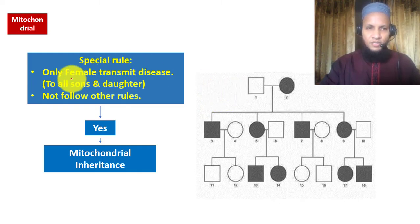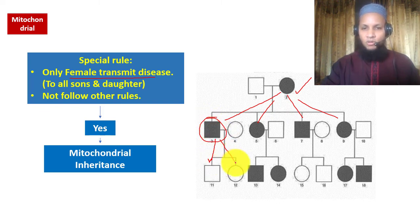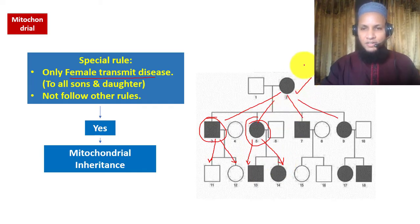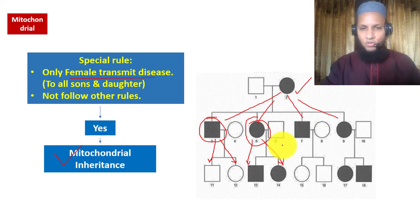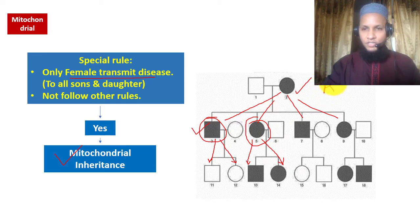In some pedigrees, only females transmit the disease. An affected female transmits the disease to both her sons and daughters, but once a male is affected, he cannot transmit the disease to his sons or daughters. Once a female is affected, she can transmit to both sons and daughters. This maternally-only inherited pattern is called mitochondrial inheritance. At first look, we can mistake it for autosomal dominant since there is no skipping and both males and females are affected.